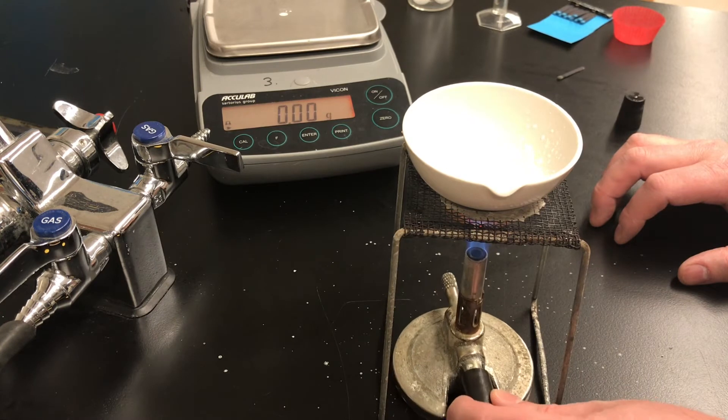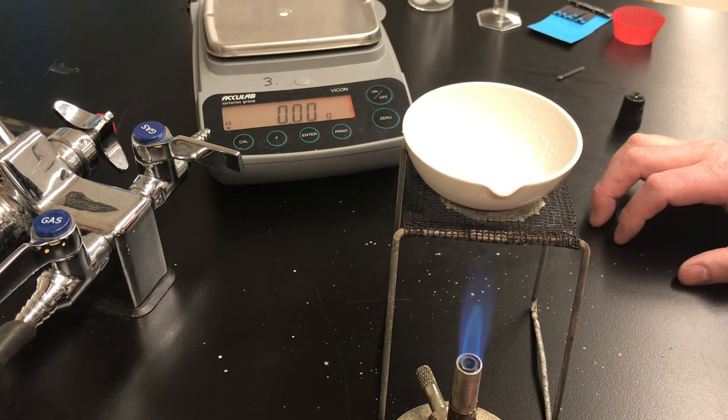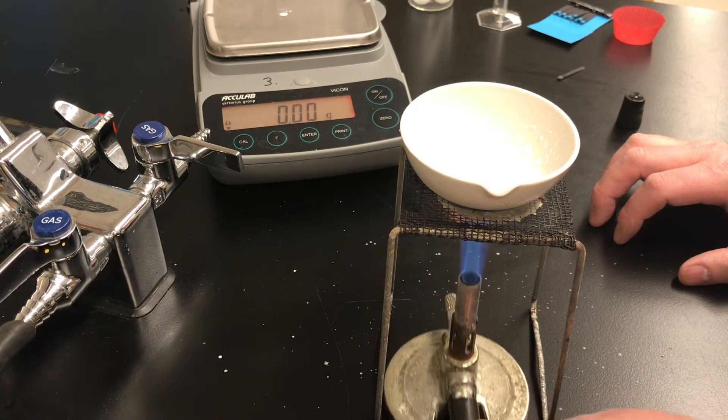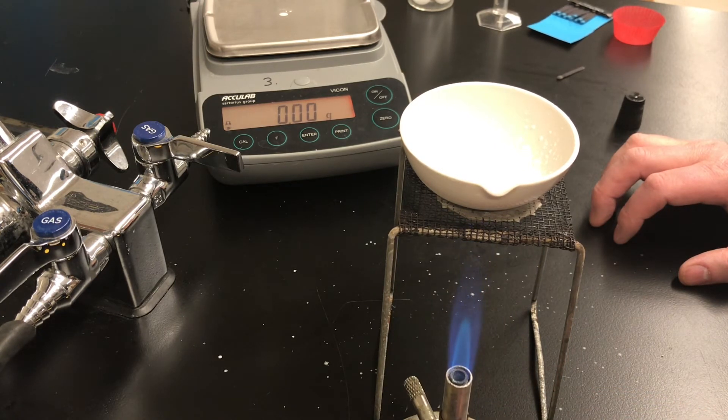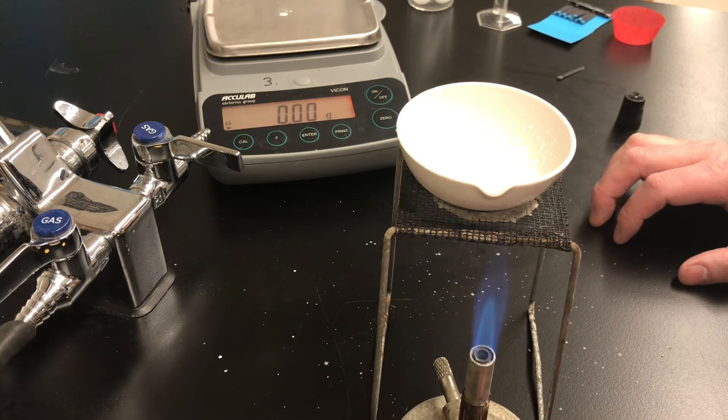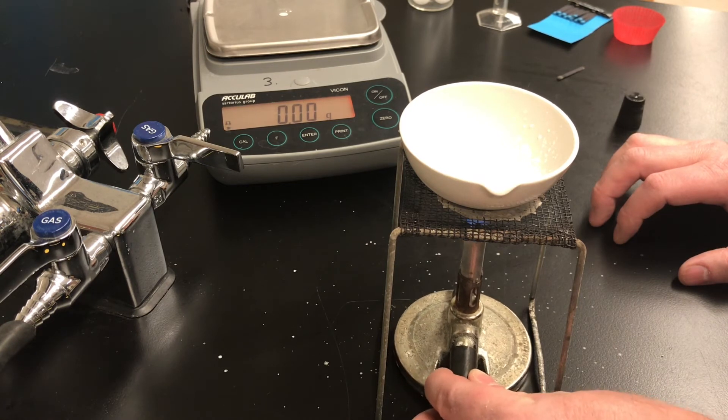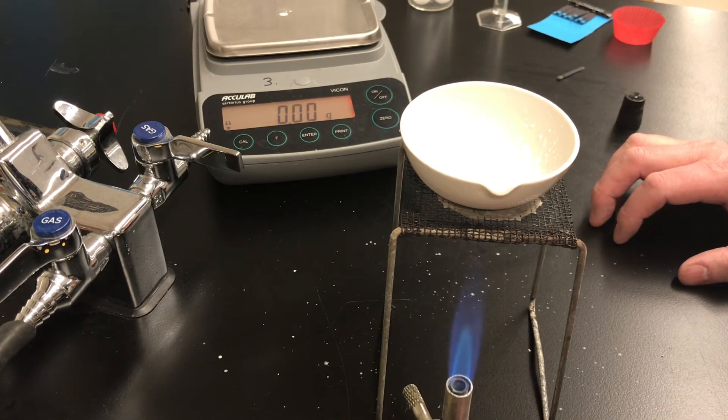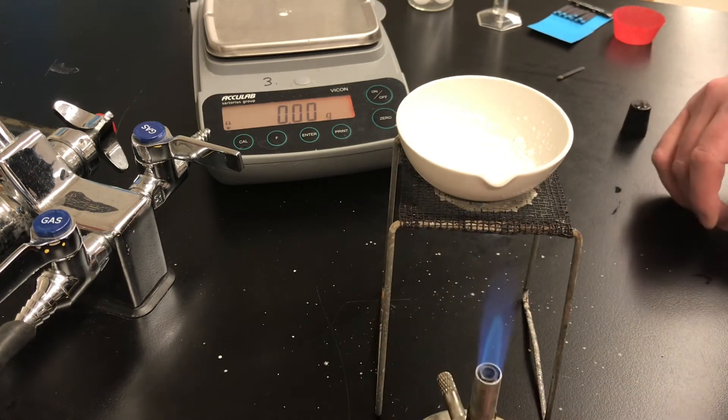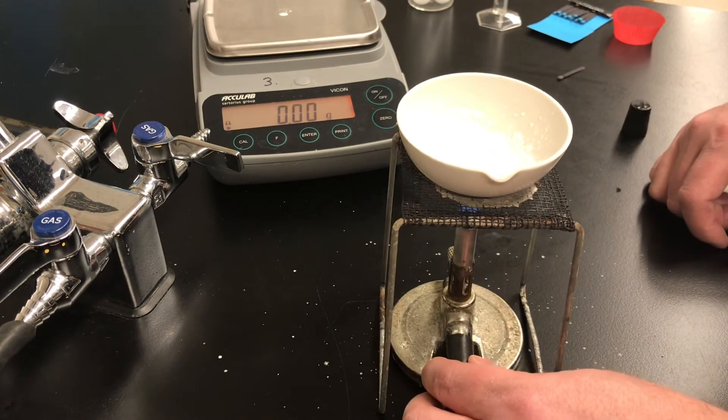If the salt spits out of the dish you're losing salt. On the other hand if water remains in the dish because you don't heat it until it's completely dry then it will appear as though the mass of the salt is heavier than it should be. The water that would be left in the dish would make it appear as though the salt's mass were too heavy. So one error loses mass, the other error gains mass. Think about how that might affect your final result.